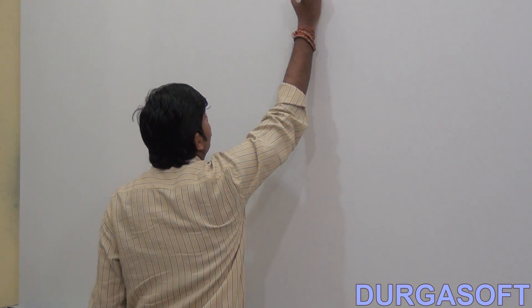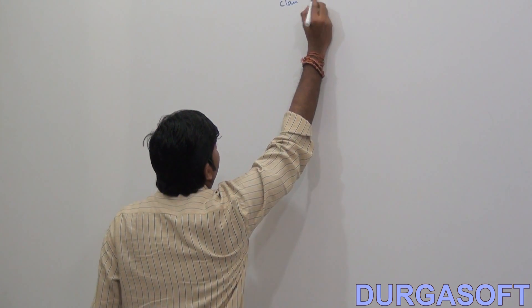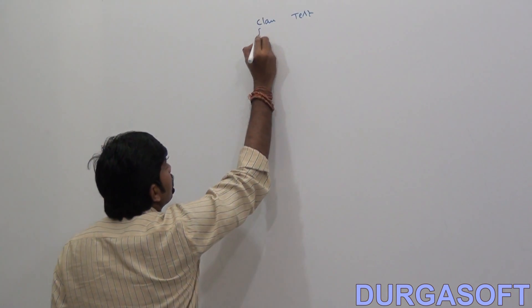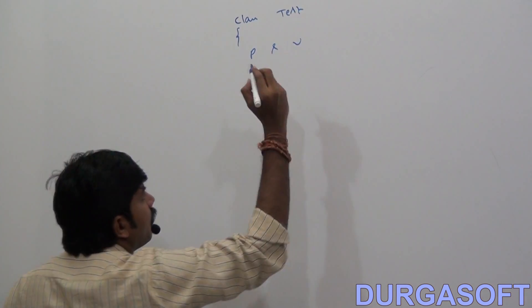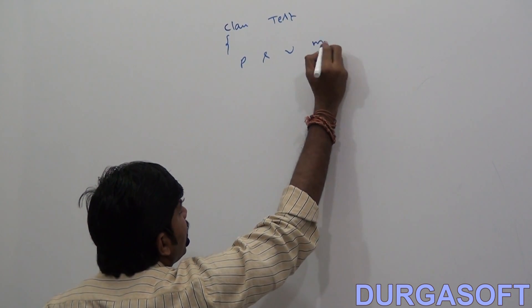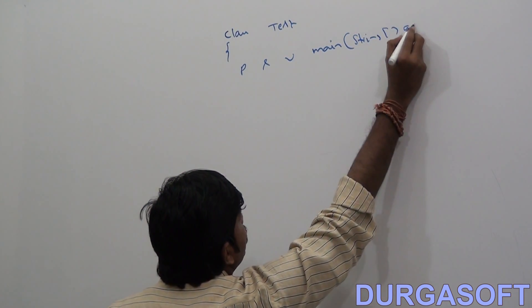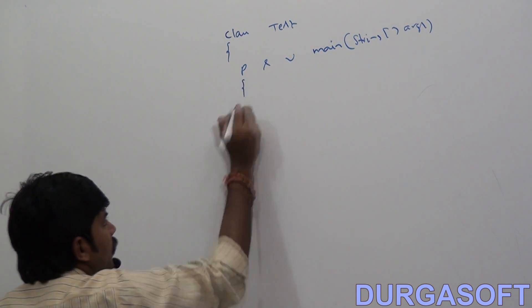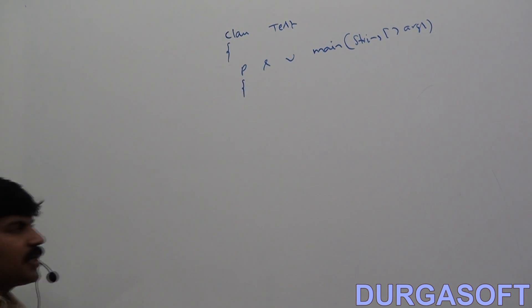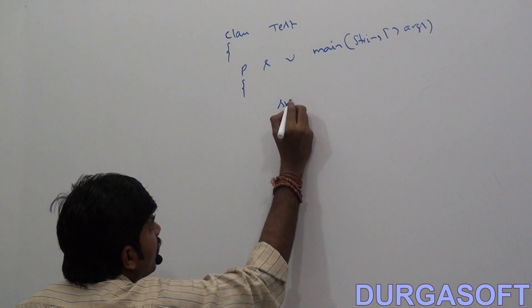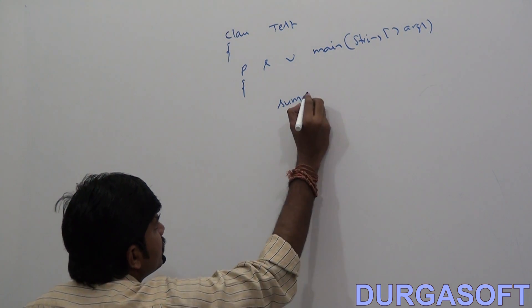Let me go for a more meaningful example — how to use a varargs method. I'll take our sum example. Class Test with a public static void main method. My target is to call a single sum method for different numbers of arguments.